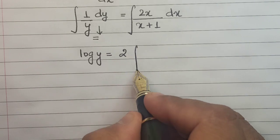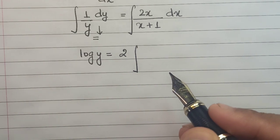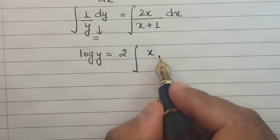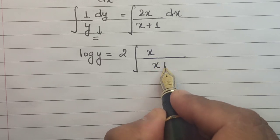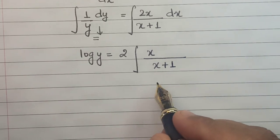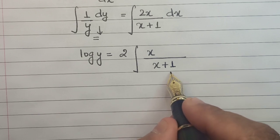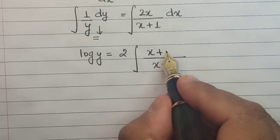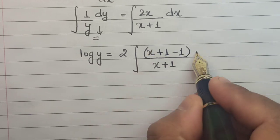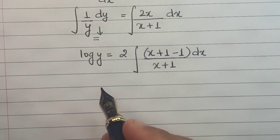First let's take the 2 constant out of the integration sign, then we're left with x/(x+1). If you look closely, this numerator and denominator are almost the same except this +1. So let us add 1 and subtract 1 from the numerator.